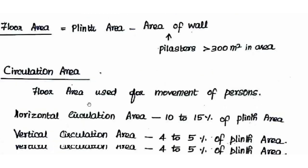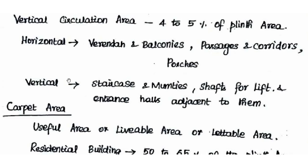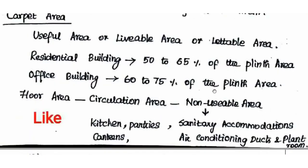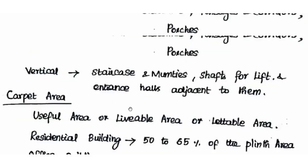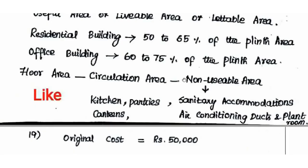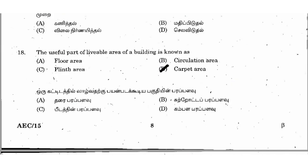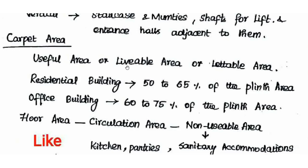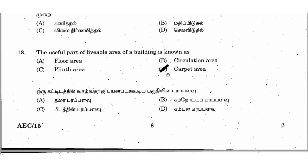In the floor area, we subtract the wall area to get the remaining. Then we subtract vertical and horizontal circulation areas. Non-usable areas — such as kitchen, canteens, sanitary accommodations, and store rooms — are also subtracted. The remaining useful area, livable area, or lettable area of a building is known as carpet area. The right answer is option D: Carpet area.